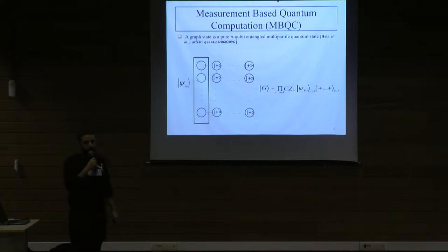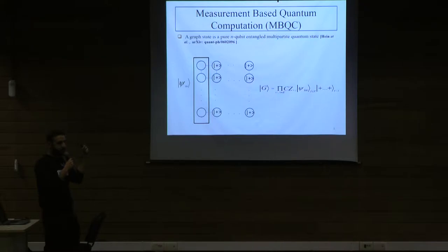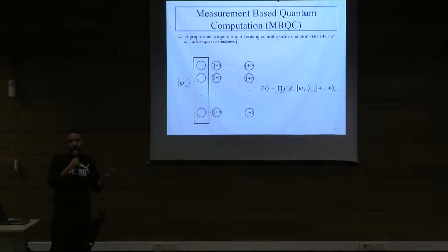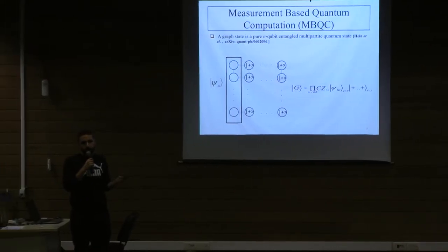Measurement-based quantum computing is a form of quantum computing which uses multipartite entangled states called graph states. A graph state is a highly entangled multipartite state which is in one-to-one correspondence with a graph. The vertices of the graph are the qubits and the edges are preparation entanglements. If your graph state is a universal resource for quantum computing, then using some measurements and some corrective strategy on this graph state you can in principle implement any unitary you want on your unmeasured output.